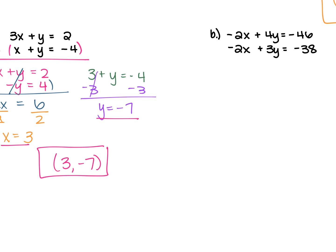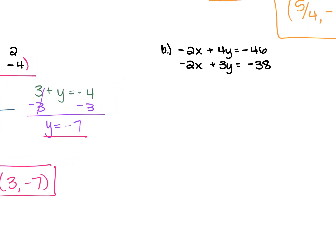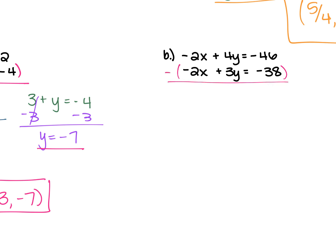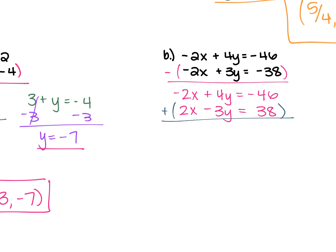For example B, we have negative 2x plus 4y equals negative 46, and negative 2x plus 3y equals negative 38. The x's have the same coefficients, so we subtract. Rewrite the top as negative 2x plus 4y equals negative 46. The bottom becomes positive 2x minus 3y equals positive 38. Now the x coefficients are opposites, so add them: x's cancel. 4y minus 3y is just y. Negative 46 plus 38 — different signs, keep the sign of the bigger number which is negative, and subtract: 46 minus 38 is 8, so y equals negative 8.